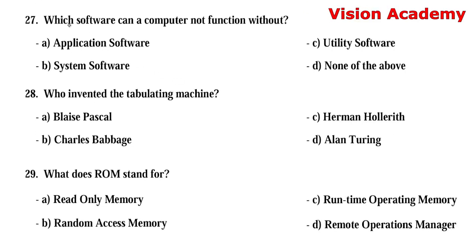Question 27: Which software can a computer not function without? Option A: application software. Option B: system software. Option C: utility software. Option D: none of the above. The right answer is Option B, system software.